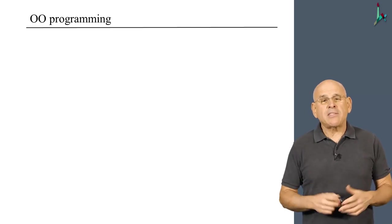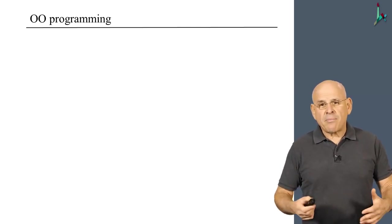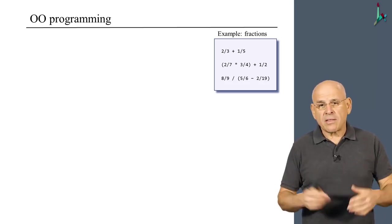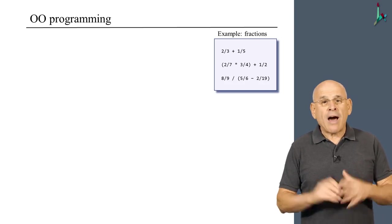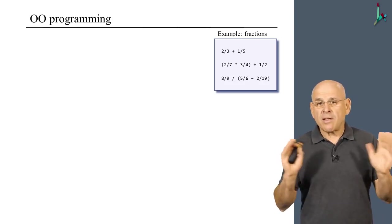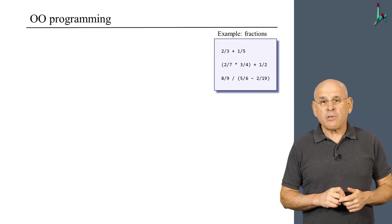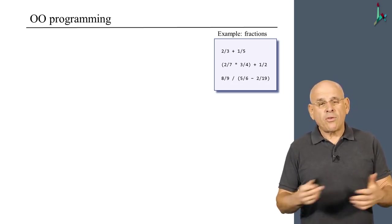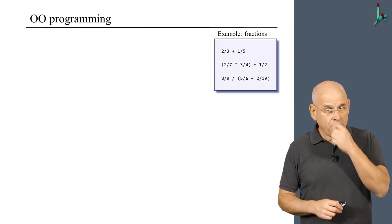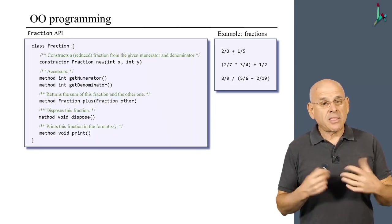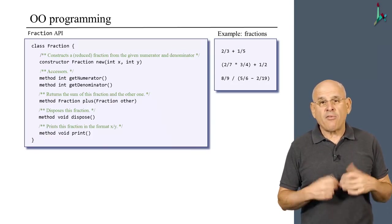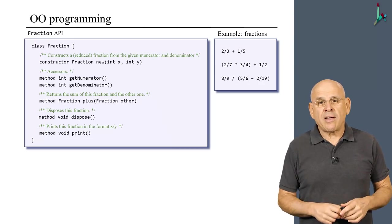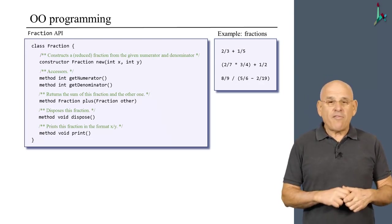So, it may be nice to invent some fraction abstraction that allows us to carry out such operations as you see here without loss of accuracy. So that everything will be as correct as possible. So, we can do this by introducing some fraction API, as you see here.